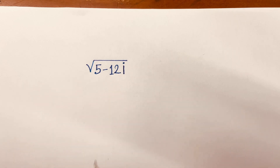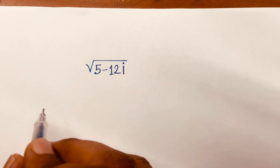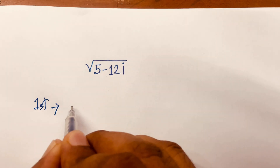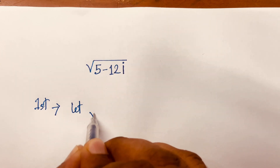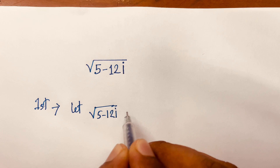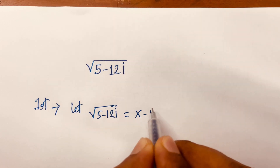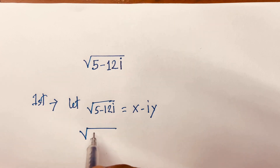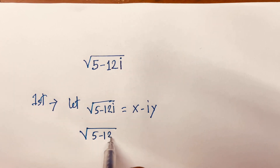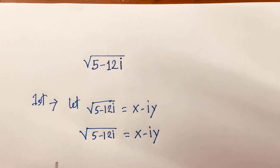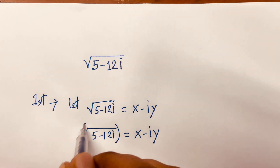How to solve square root of (5 minus 12i). I solve this question using a first method. Let square root of (5 minus 12i) equal to x minus iy. Then I square both sides.